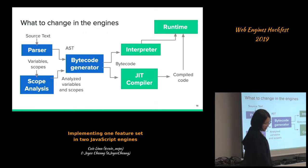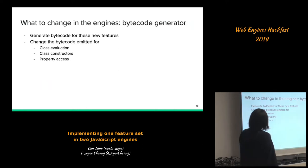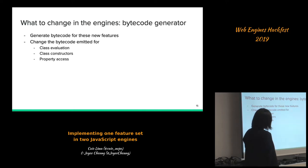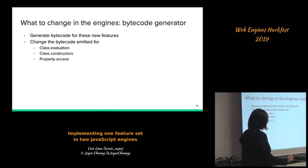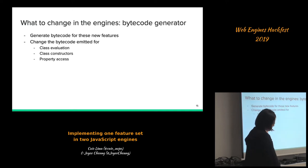Next we need to emit new bytecodes for these new class features. We need to change the bytecode emitted for class evaluation as well as the bytecode for class constructors in the case of instance private names, and we also need to modify the bytecode emitted for property accesses, especially for private property accesses.